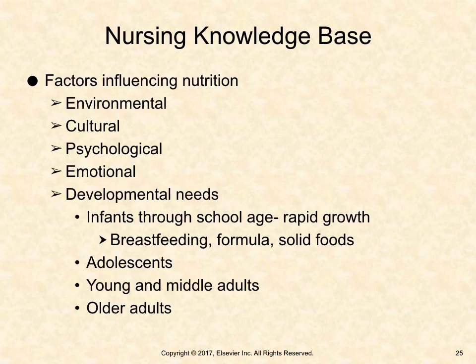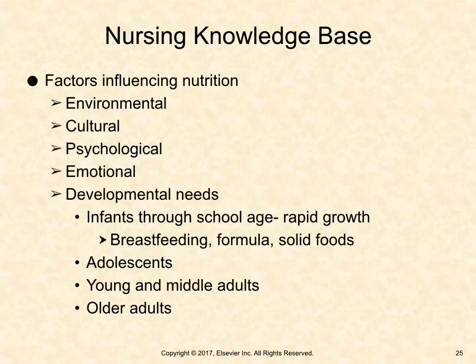Nursing knowledge base: Several factors influence nutrition — environmental, cultural, psychological, emotional, and developmental needs. Infants through school-age children experience rapid growth and require high-protein meals. School-age children should be assessed for adequate protein and vitamins A and C intake. Adolescents have increased energy needs owing to higher metabolic growth demands. Young and middle adults' requirements focus on energy for maintenance and repair as growth slows. Older adults experience a decreased need for energy due to slowing of their metabolic rate.